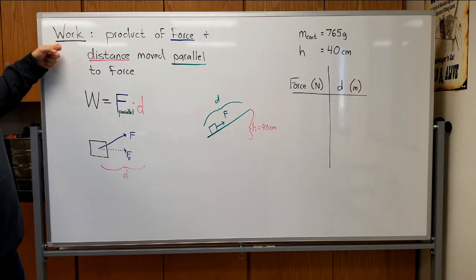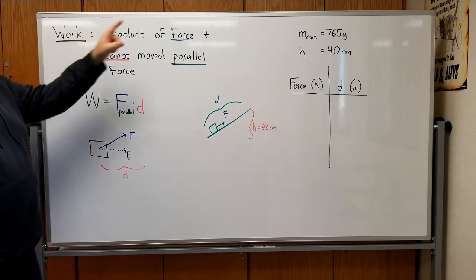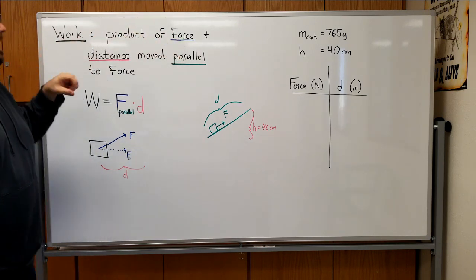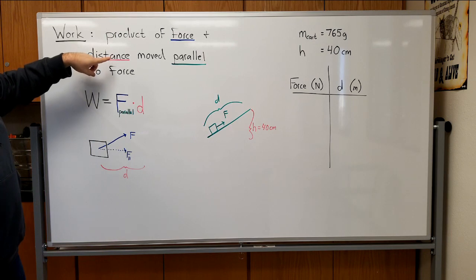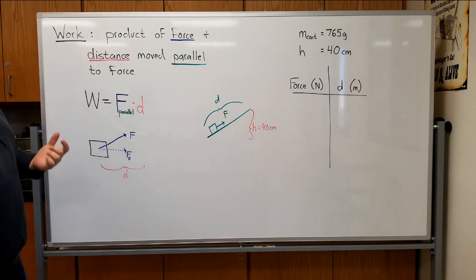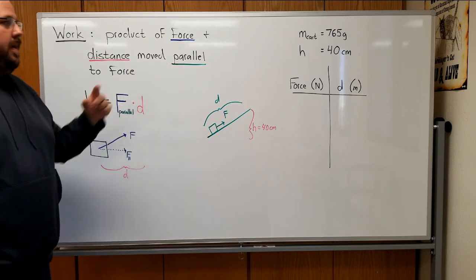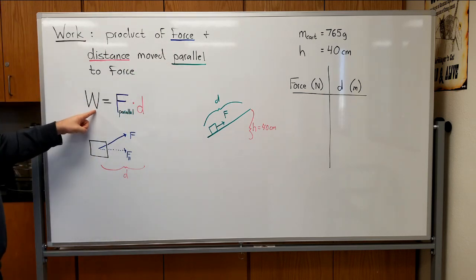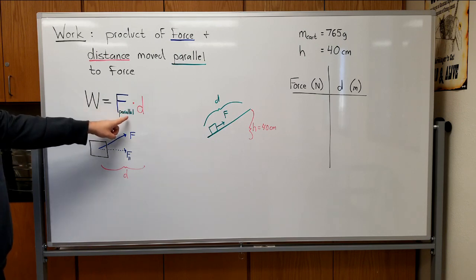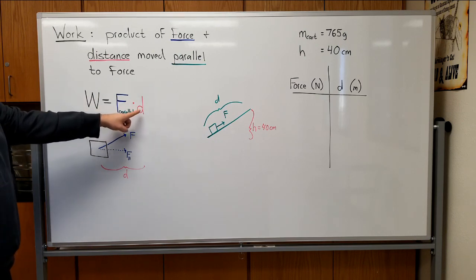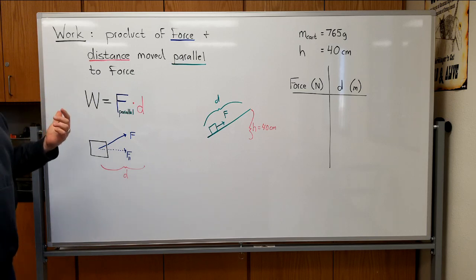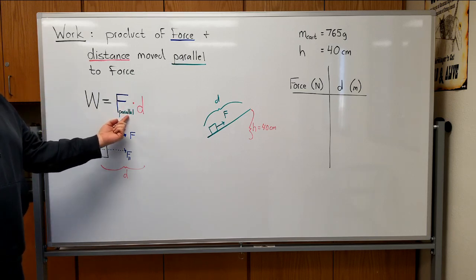Work is another physical quantity, and it is simply the product of force when you push something and the distance that it moves as a result of it being pushed, with the caveat that the force and the distance must be parallel to each other. We have a simple equation for work: we use the symbol W. Work is simply equal to force times distance.